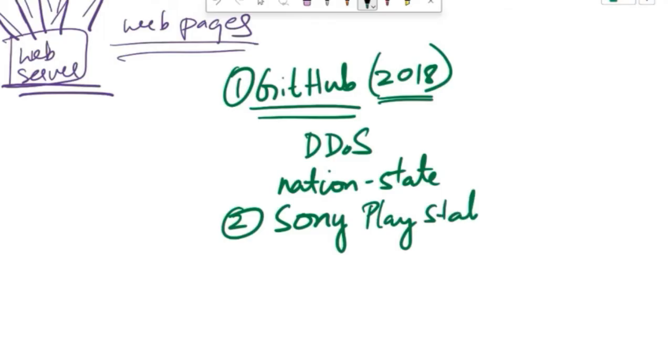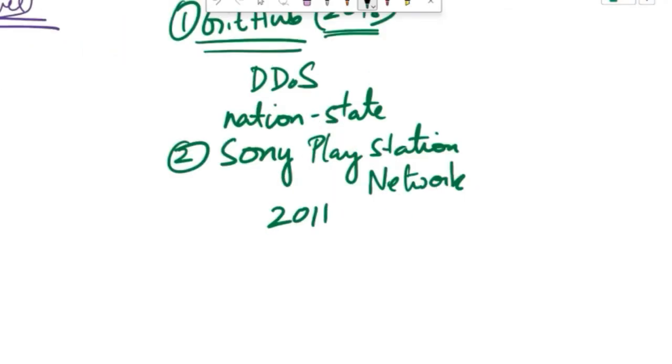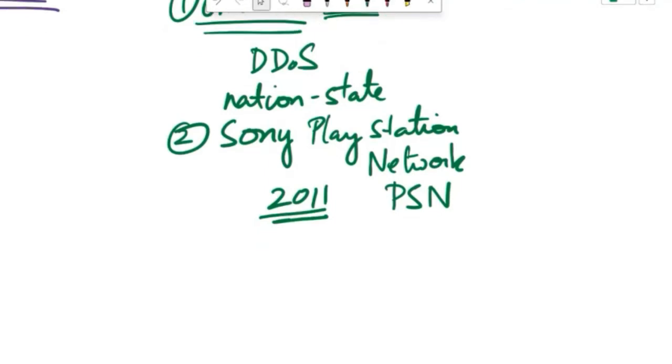Next one is Sony PlayStation Network. Sony's PSN. This happened in 2011. The PSN experienced a prolonged outage due to a large-scale DDoS attack. The motivation behind the attack was unclear, but it resulted in significant disruption to Sony's online gaming services, affecting millions of users worldwide.